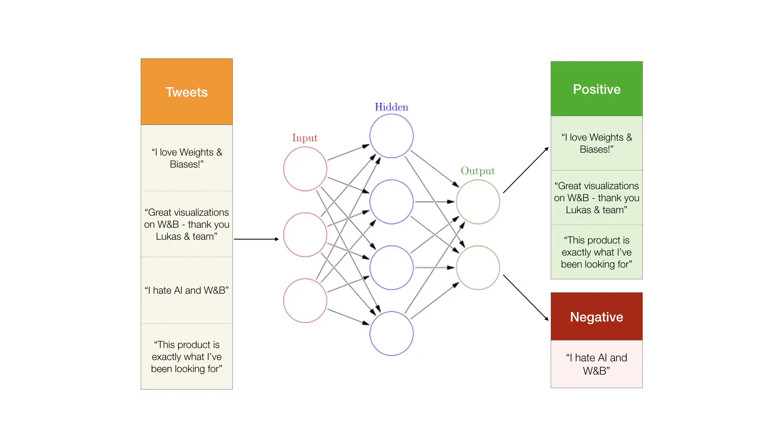Here's the real-world challenge for today, and it's a problem I see all the time that companies want to do. We want to take tweets about a brand and classify them as positive or negative. I have some real-world data collected by my company, Figure Eight, about Apple products — tweets from South by Southwest where people are saying positive or negative things about Apple products. From that, we want to build a classifier that can look at more tweets and say if they're positive or negative.